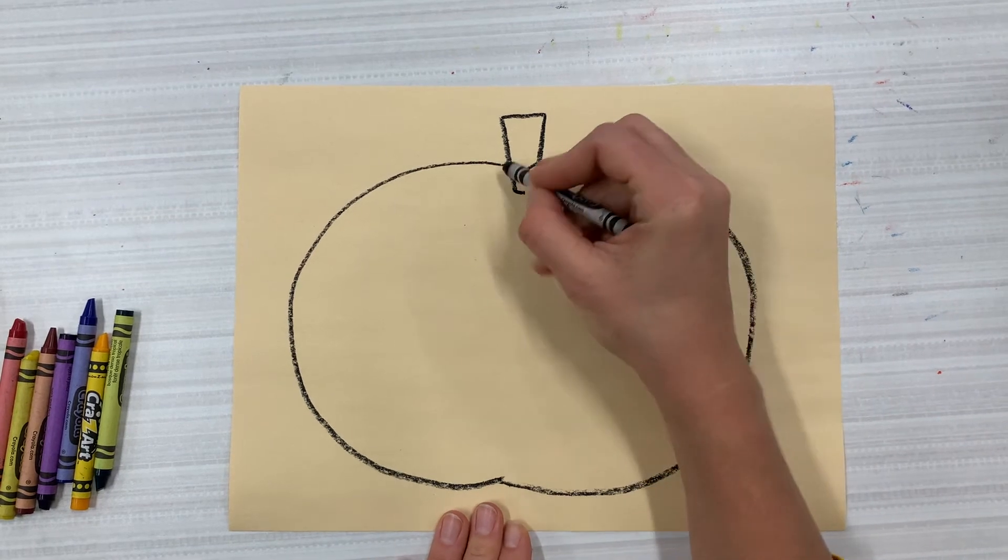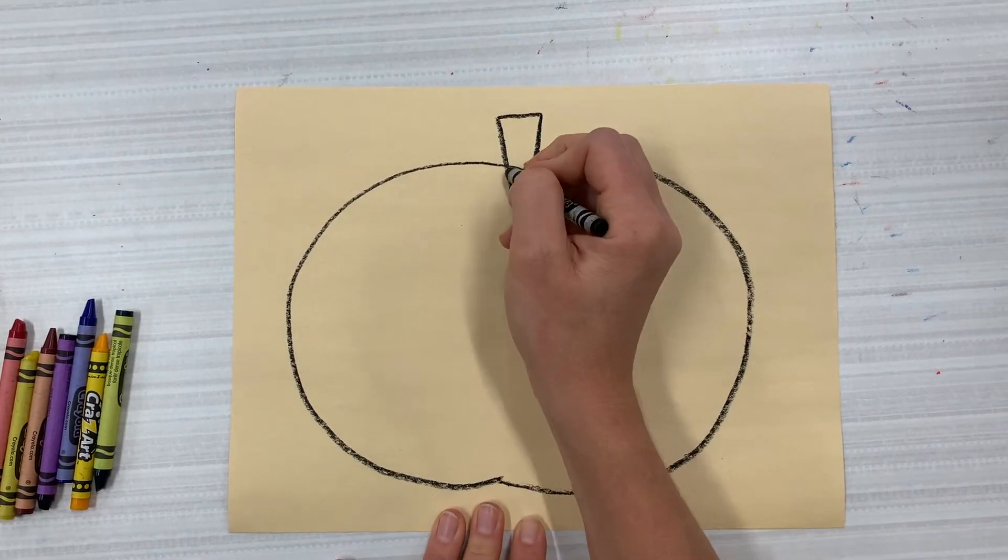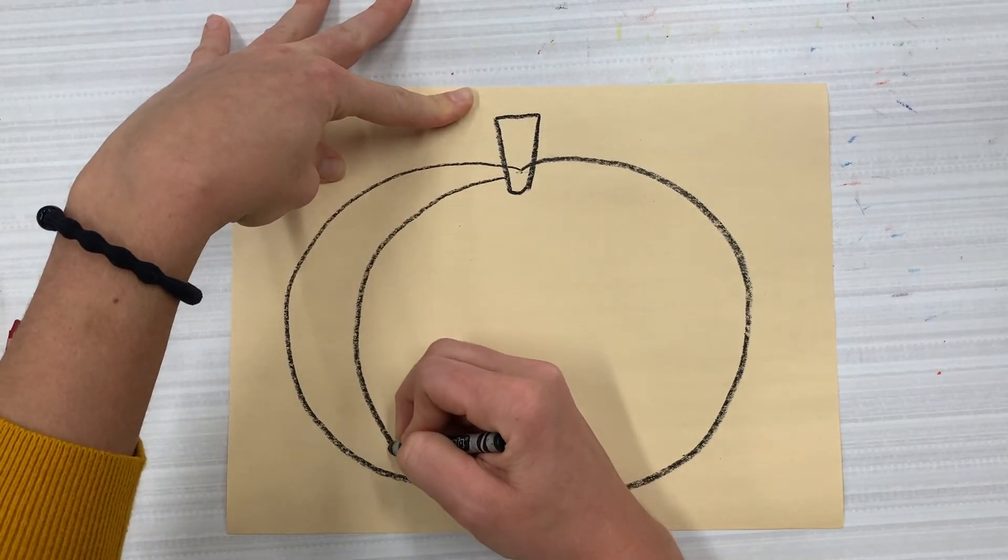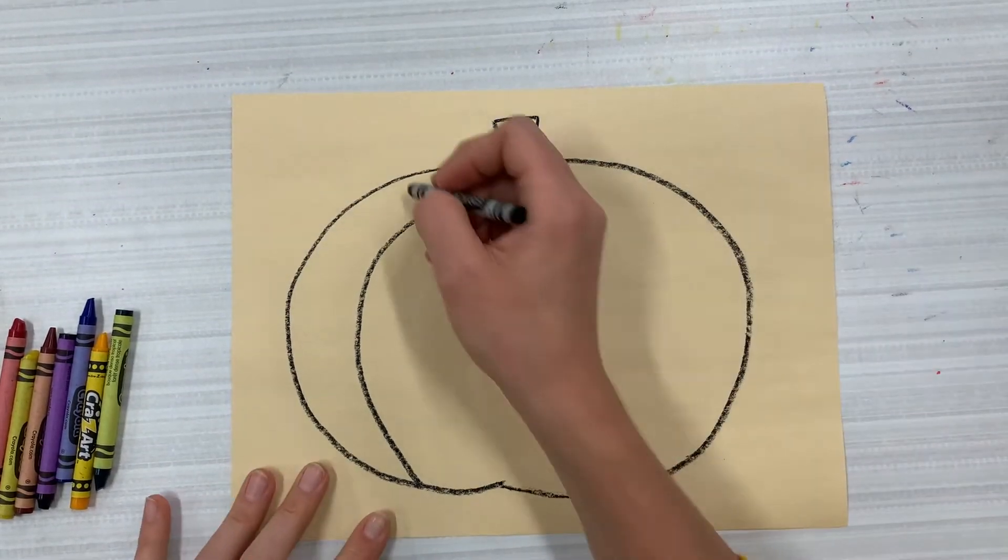Now let's draw the lines on the pumpkin. I'm going to call these sections, which means kind of a piece. So I'm going to follow that curved line but draw on the inside like that.